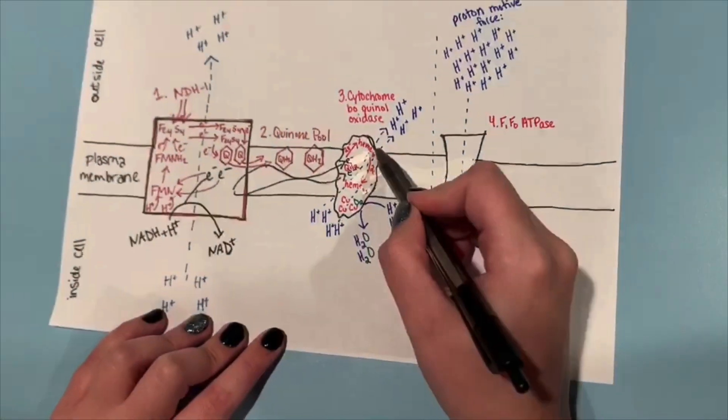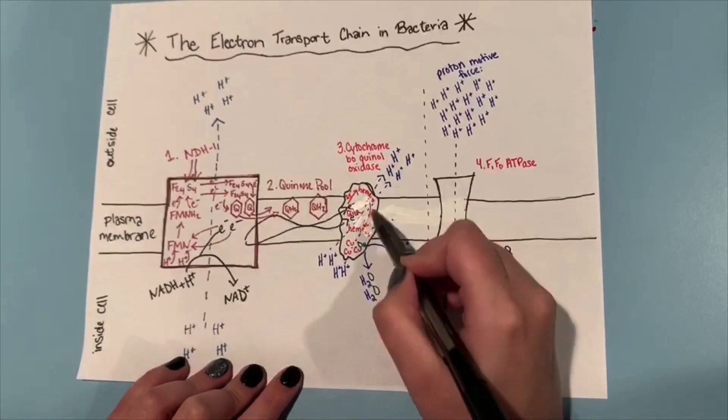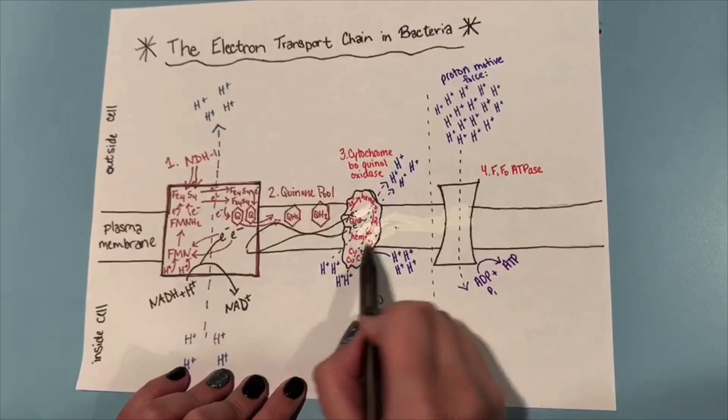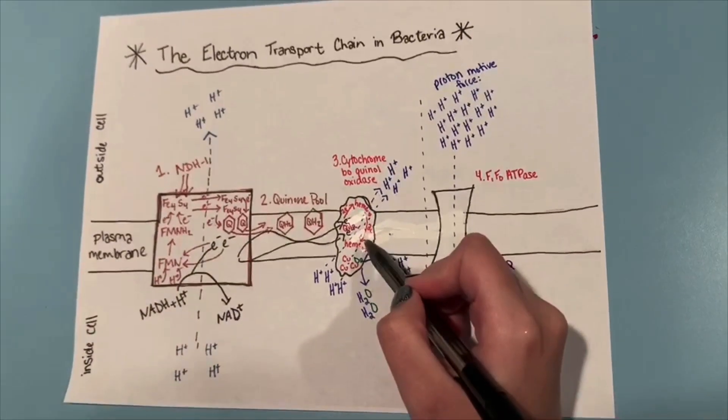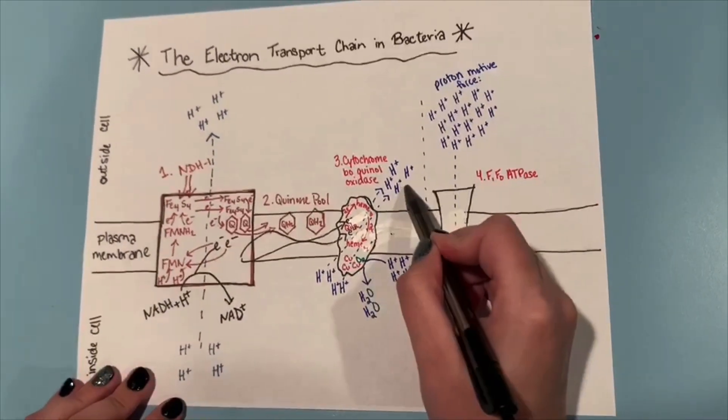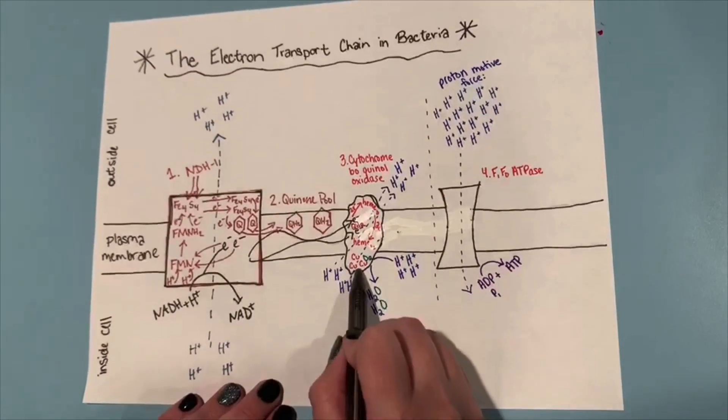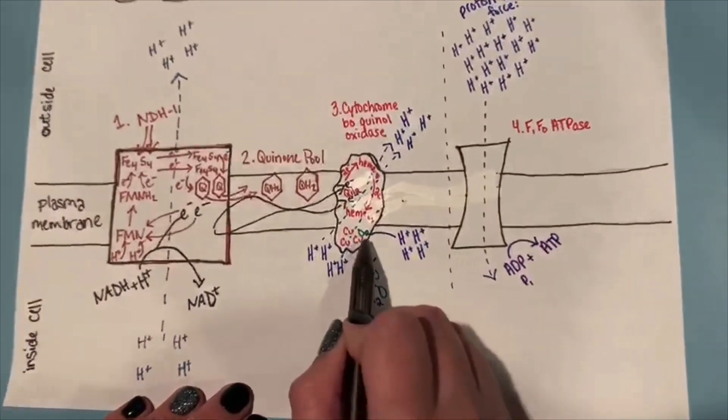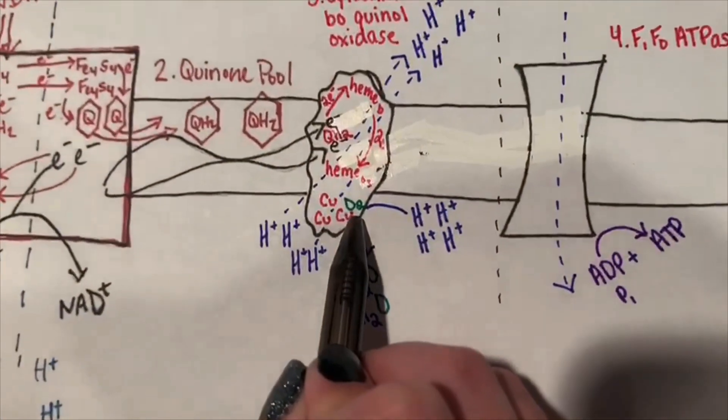The heme B then donates those two electrons to heme O3. This process is coupled with a proton pump that moves two more hydrogens across the membrane. These three copper ions down here hold a molecular oxygen in place.